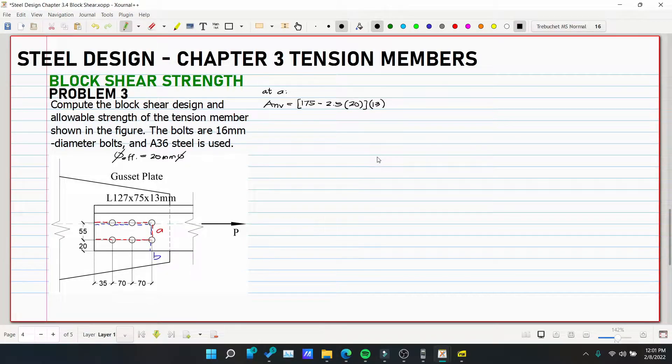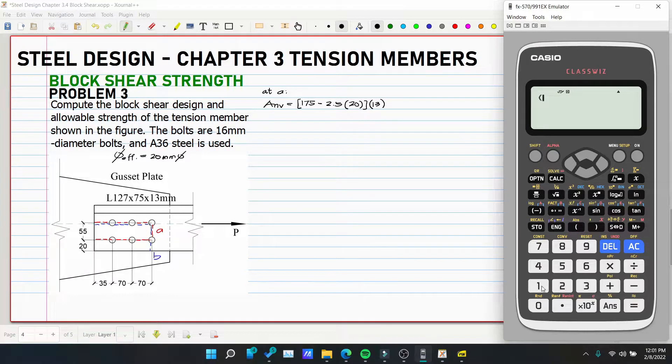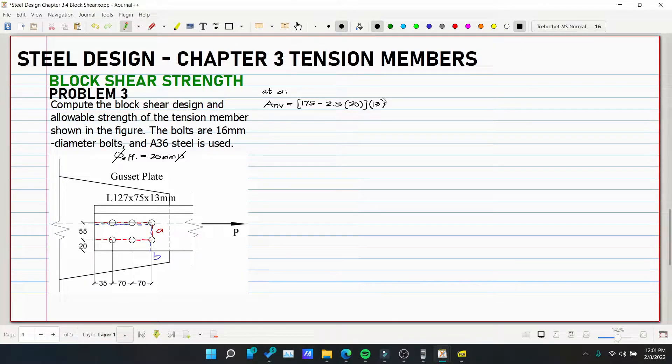So let's compute. 175 minus 2.5 of 20, multiplied by 13. Then multiplied by 2 because there are two shear surfaces there. So 3250 multiplied by 2. So our ANV is equivalent to 3250 mm squared.